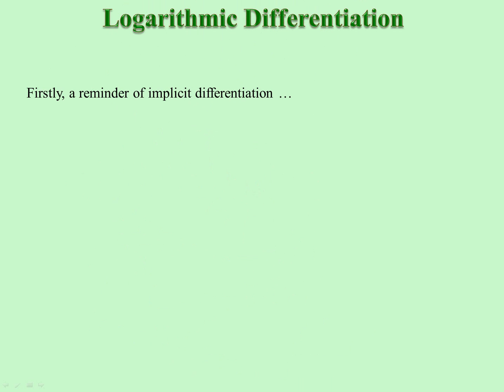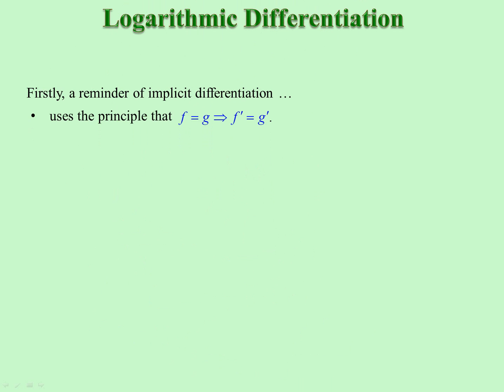Firstly, as it uses implicit differentiation, let's have a reminder, using the principle that if f equals g, then f prime equals g prime. If a function equals another, then their derivatives are equal.